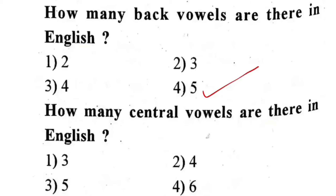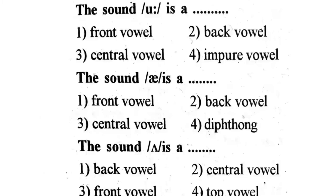Next question: How many central vowels are there in English? First one, three. Second one, four. Third one, five. Fourth one, six. The correct answer is first one — three. Next question: The sound U is — first one, front vowel. Second one, back vowel. Third one, central vowel. Fourth one, impure vowel. The correct answer is second one — back vowel.